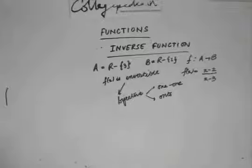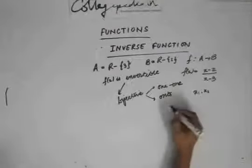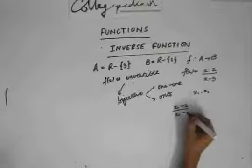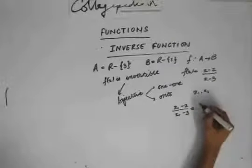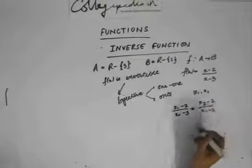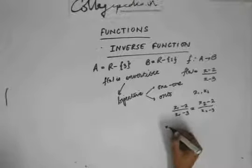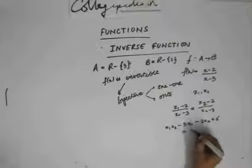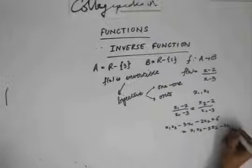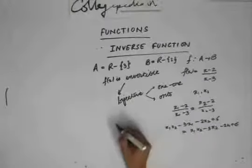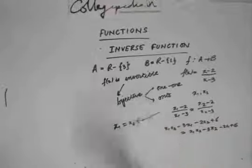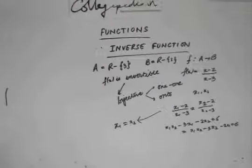Let's check whether f is one-to-one. Take two elements x one and x two from set A which are distinct. We need to show that if f(x one) equals f(x two), then x one equals x two. Working through the algebra, we get minus three x one minus two x two plus six equals two x one x two minus two x one plus six, which gives us x one equals x two. So the function is one-to-one.